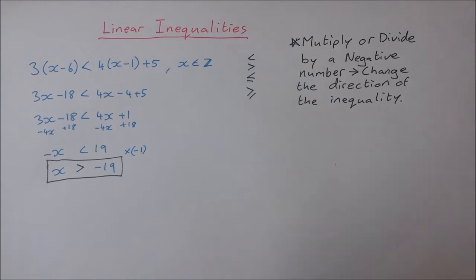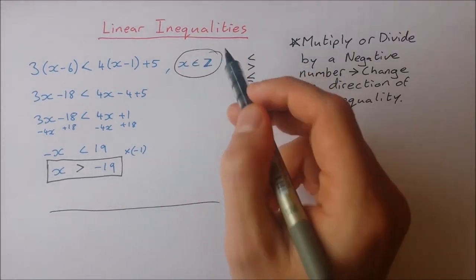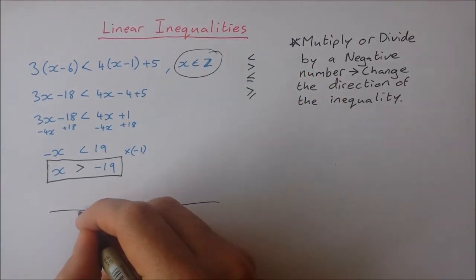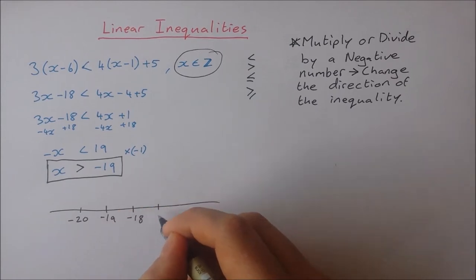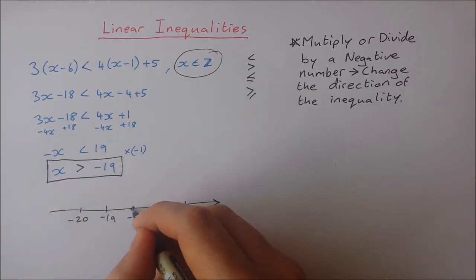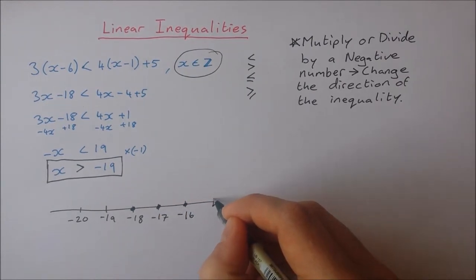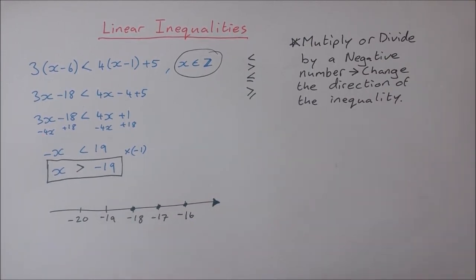Now I can show that on a number line. Quick sketch here. x is greater than minus 19 and it's an element of z. So the way we represent that is solid dots and everything greater than minus 19. We don't include minus 19 this time and we only include the integers. And then the arrow at the end will signify that this goes on forever in this direction here.